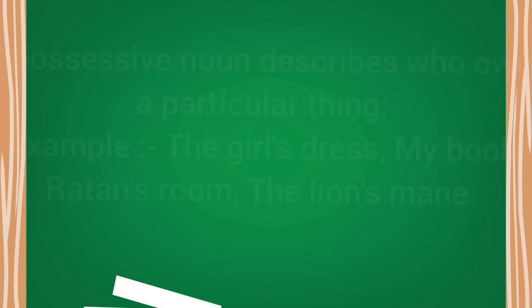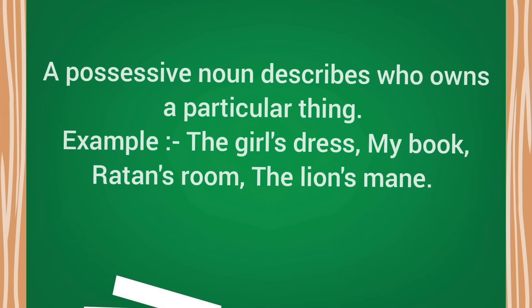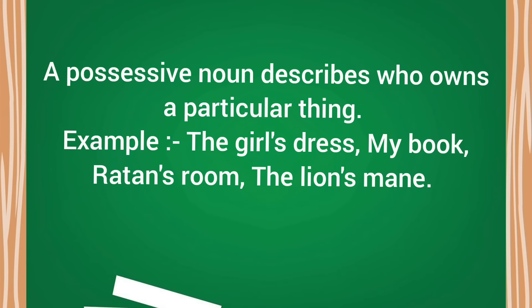Now possessive noun. Possessive noun describes who owns a particular thing — like the girl's dress, Ravi's room, the lion's mane, my book, my mobile etc. Possessive noun describes the position of a particular thing.